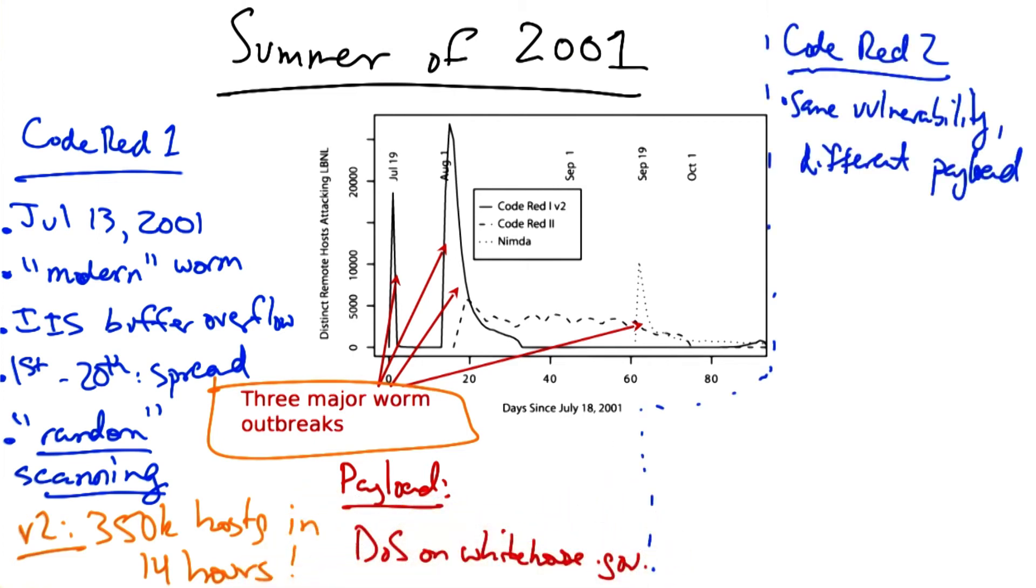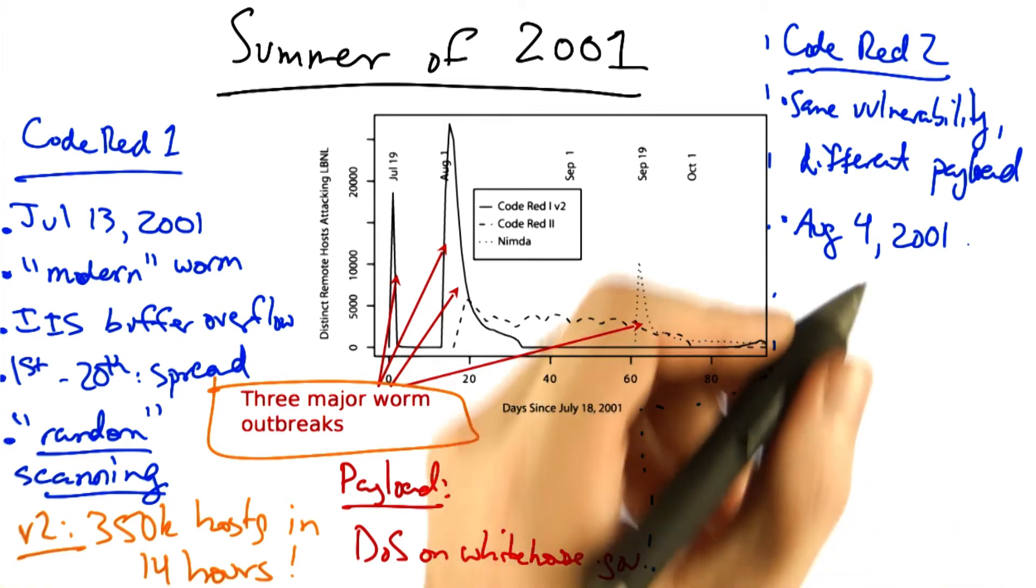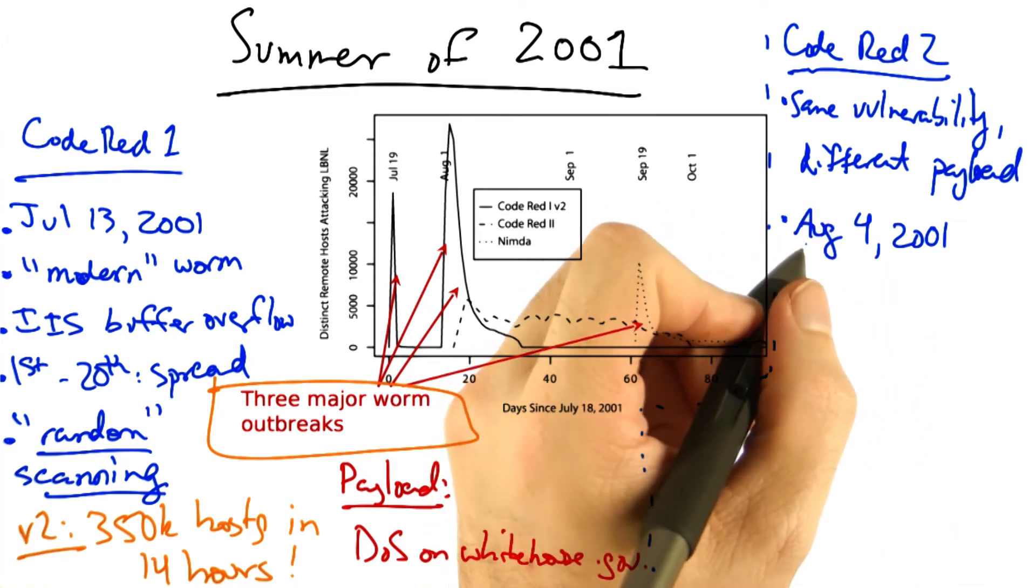Code Red 2 exploited the same vulnerability, but had a completely different payload. It was released on August 4th, 2001, and was called Code Red 2 mainly because of a comment in the code. The worm actually only spread on Windows 2000. It actually crashed on Windows NT.